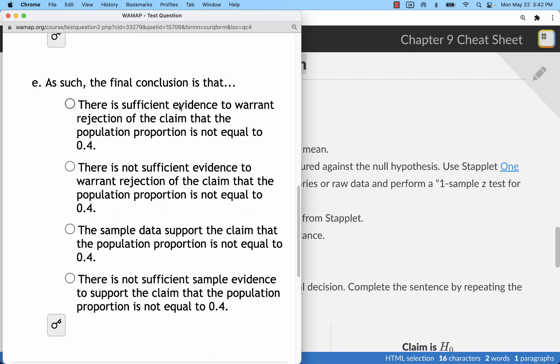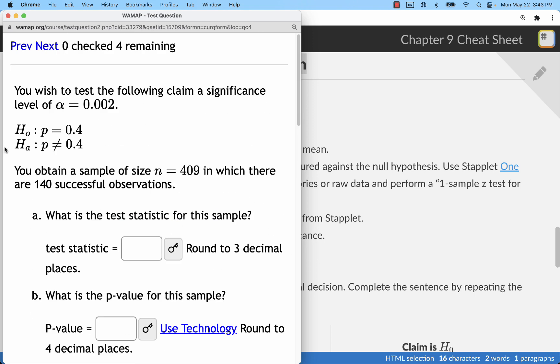But if we read down in the end here, we do see that it says the claim that the population proportion is not equal to. All the options are going to go with that, so it will be similar to others where HA was the claim, and that's honestly usually the case when we do these tests.